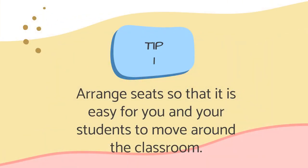Tip number one: Arrange seats so that it is easy for you and your students to move around the classroom. It's good to have easy accessibility, as the teacher needs to be able to reach students during activities and circulate around the classroom as part of classroom management. Also consider the flow of your students — can they easily get up for activities, line up, or access materials? Make sure nothing is obstructing those pathways around the room. These are all things to consider when arranging tables, desks, and chairs.